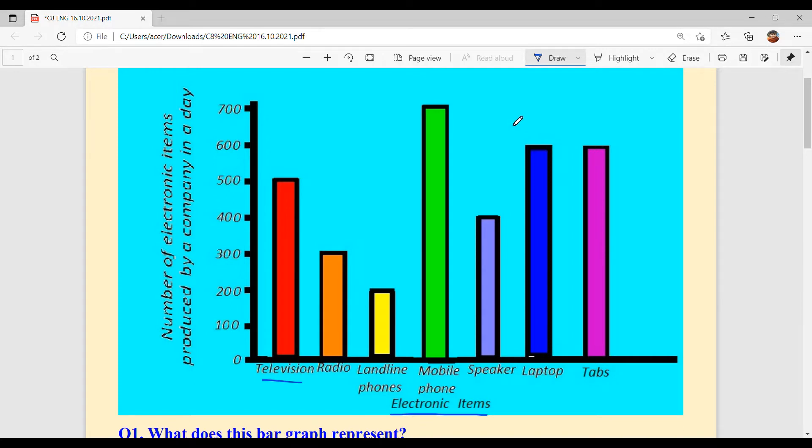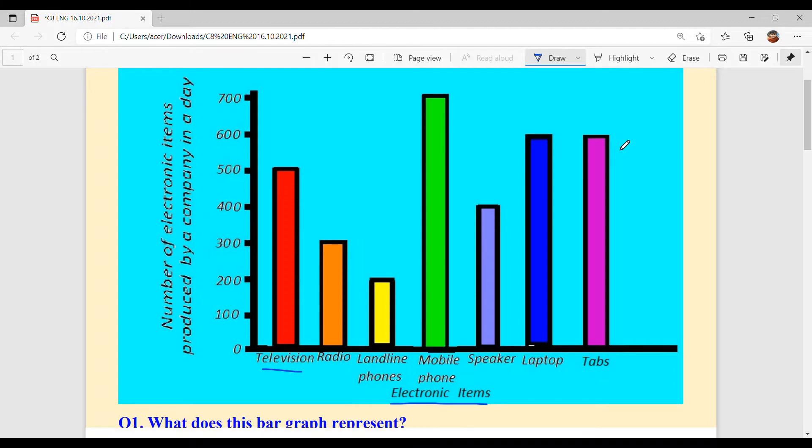So, one thing is clear. Maximum, mobile phone. Minimum, landline. Two same, which are laptops and tabs with 600 each. Now, let us solve the questions.